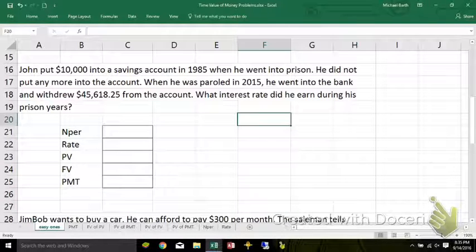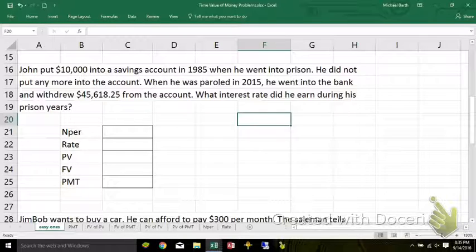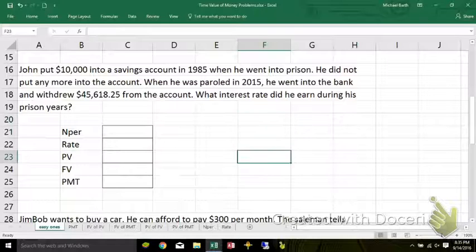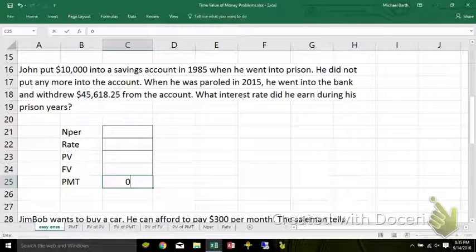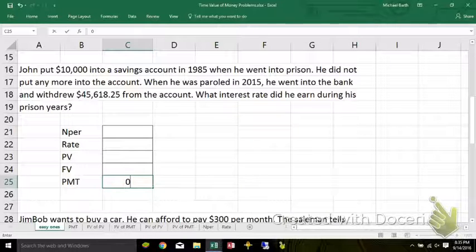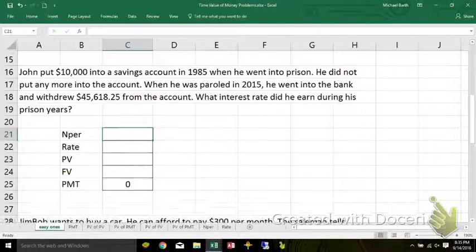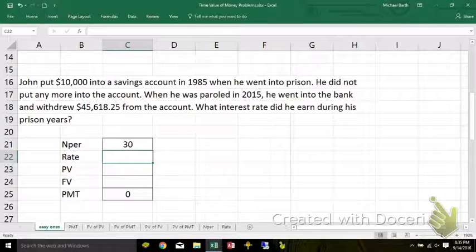John put $10,000 in savings in 1985 when he went to prison. Didn't add anything else to the account. So if he didn't add anything else to the account, his payments over the time when he was in prison are zero. He went into prison in 1985. He came out in 2015. That would be 30 years.